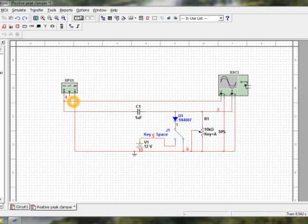This is for the unbiased condition. In biased clamping the bias voltage also gets added along with the input depending on the polarity.